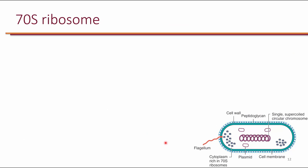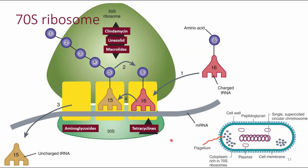Looking at a typical bacterial cell, inside the cell there is a circular chromosome, multiple plasmids, and multiple ribosomes. In prokaryotes, we have 70S ribosomes floating inside the cytoplasm. The 70S ribosome is the primary site of action of aminoglycosides, consisting of a 50S subunit and a 30S subunit. Aminoglycosides bind to the 30S subunit, interrupting translation of messenger RNA into a polypeptide. For aminoglycosides to work, they need to go inside the cell first to find the ribosomes and inhibit protein synthesis.